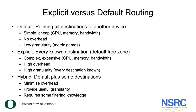Explicit routing points to every known destination. This is also known as the default free zone. This is very complex and expensive as it requires a lot of CPU, memory, and bandwidth.